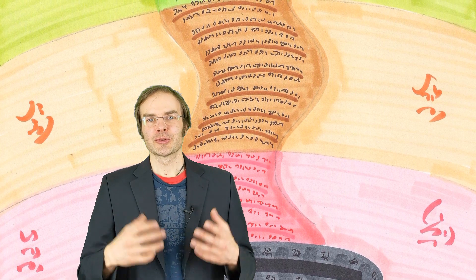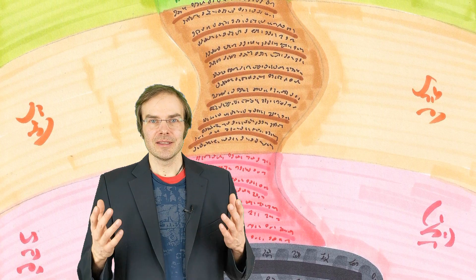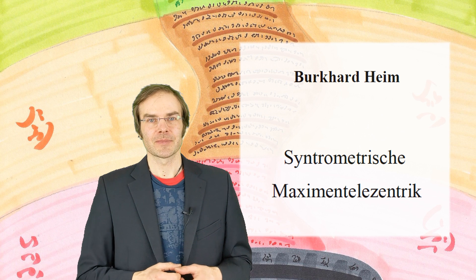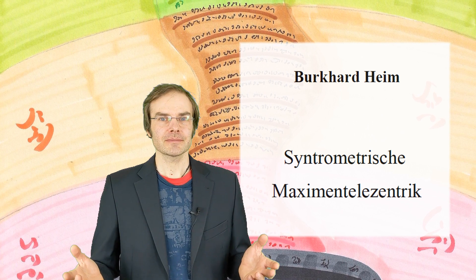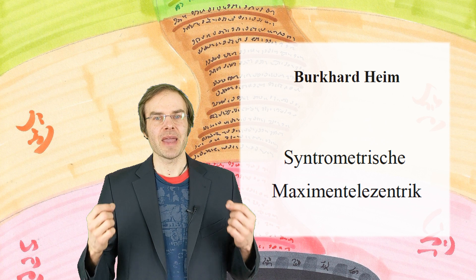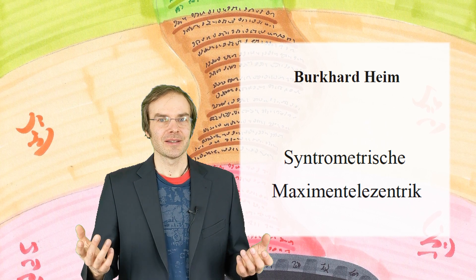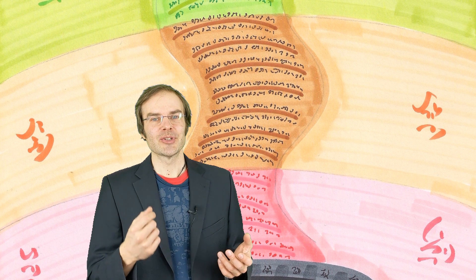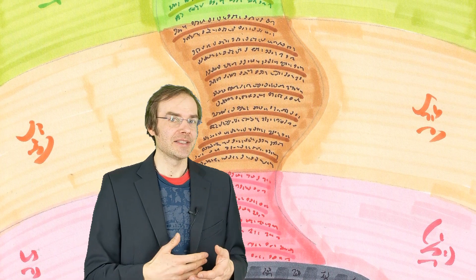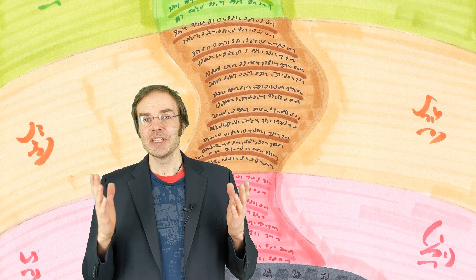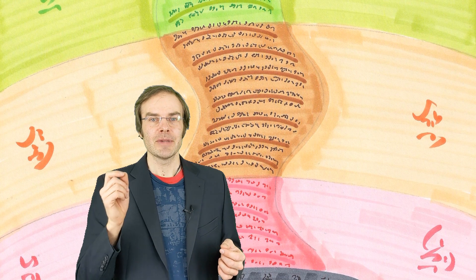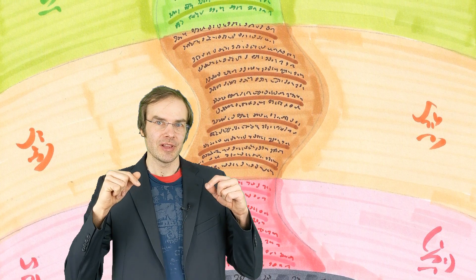Burkhard Heim made a lot of effort to solve this problem and he wrote this manuscript called Synthrometrische Maximen Telecentric, in short Syntrometry, which he considered his main work actually. As I said, the mass formula was a piece of cake compared to that, at least to him. That manuscript has only been published after Heim's death and there has never been made an effort to translate it into English language. But if you want to check the German version, it is available under heim-theory.com. I put the link in the video description.